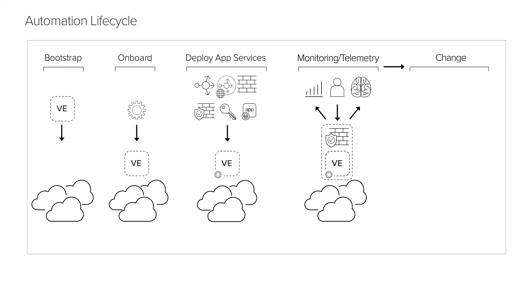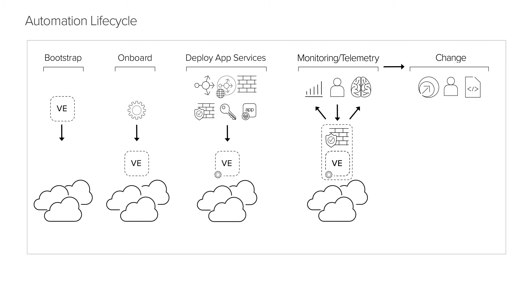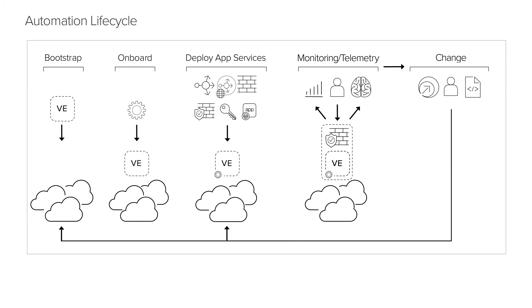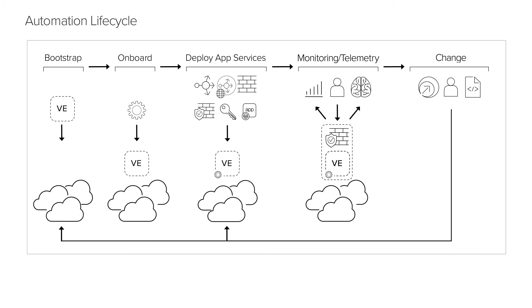Finally, there's Change. We all know App Services configurations change as needs evolve. In this stage, changes are applied to previous lifecycle stages, creating a repeating loop.